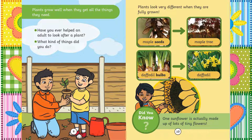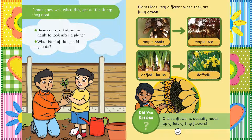Plants look very different when they are fully grown. Maple seeds and look at that maple tree. Daffodil bulbs and look at those beautiful daffodils. Did you know one sunflower is actually made up of lots of tiny flowers?